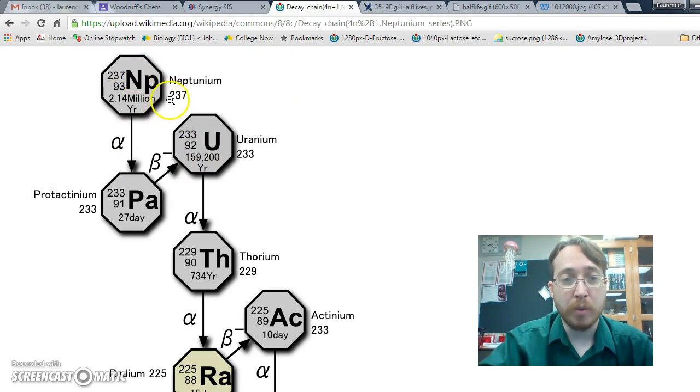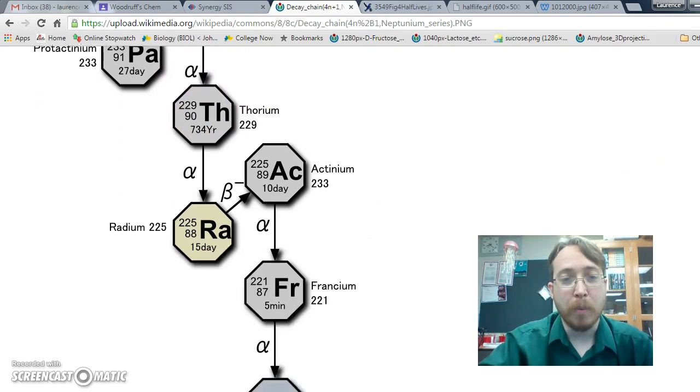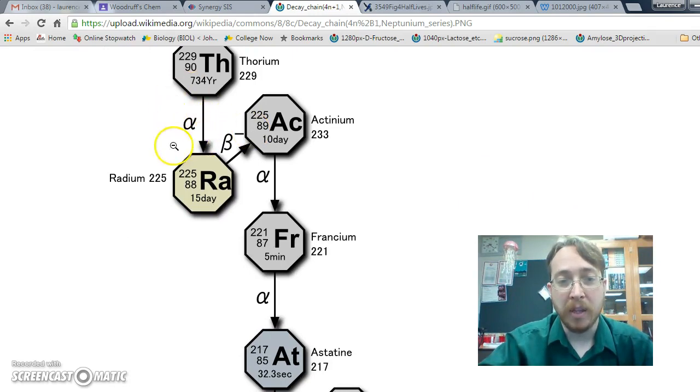In this one, we start with neptunium, and if it undergoes alpha decay, it'll become protactinium, but then it's still not stable. And then it'll undergo beta decay to become uranium, still not stable. And then it'll lose two protons and two neutrons to become thorium, still not stable. And then it will lose another helium atom to become radium-225, still not stable.